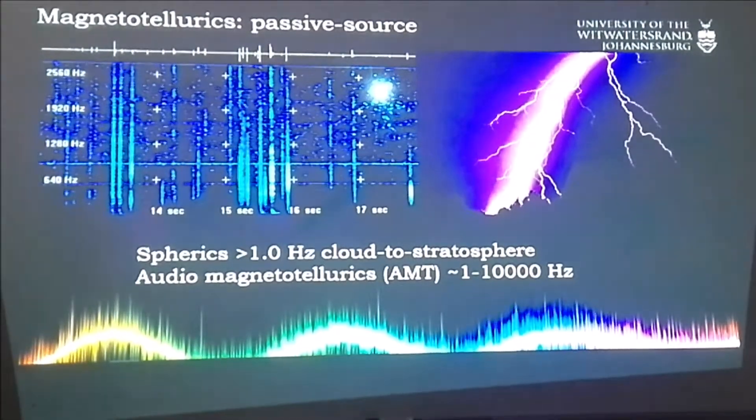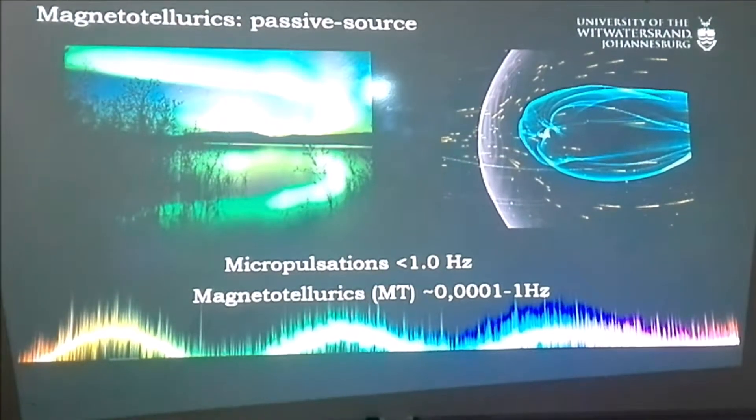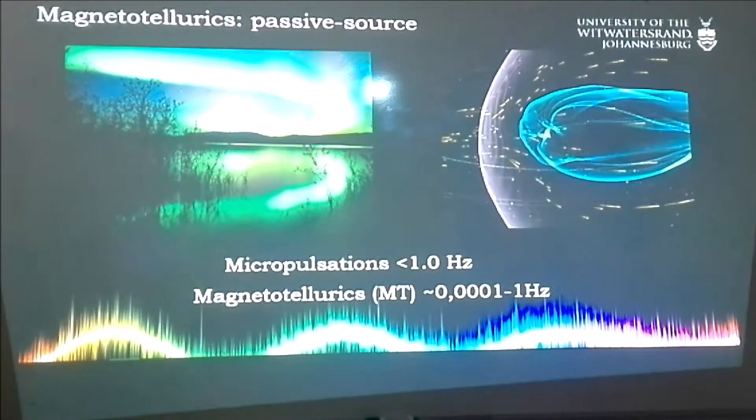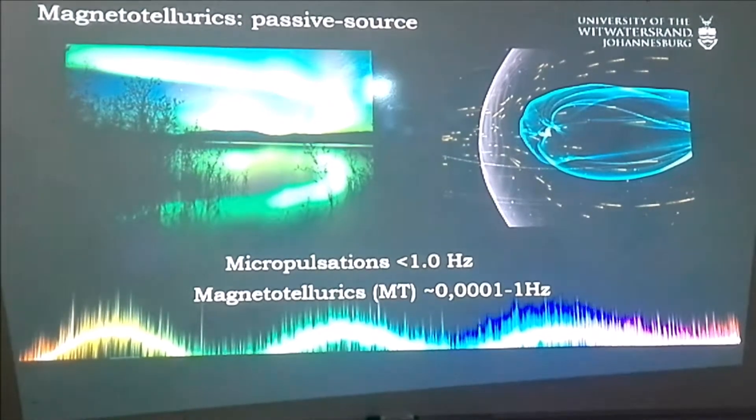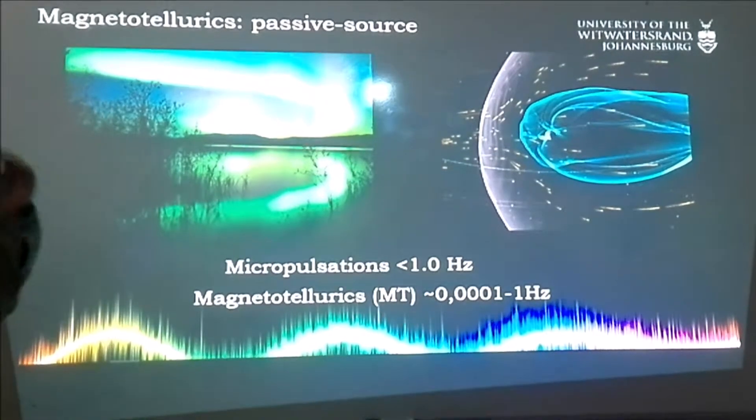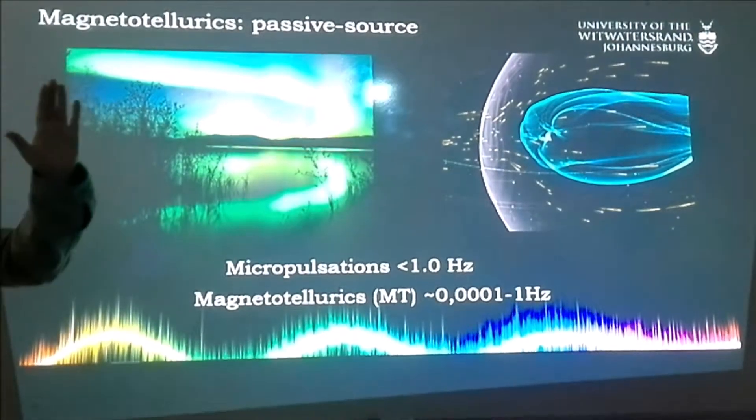And then the second source is our low frequency source. This is below one hertz. And this is called micropulsations. This is a bit more complex. What happens here is that we have solar winds, which is a consistent plasma coming from the sun, and the plasma itself has a minor magnetic field.